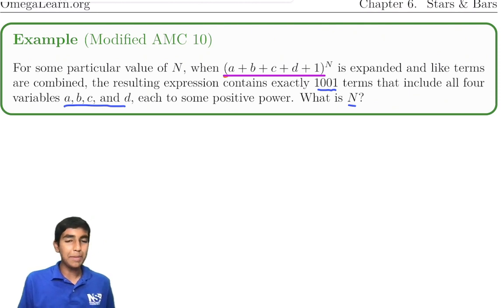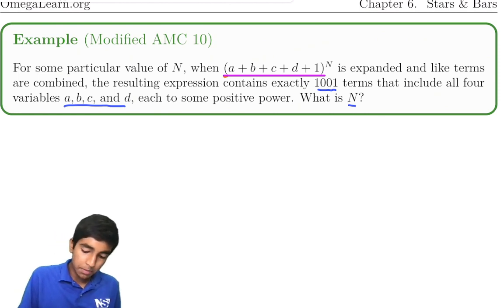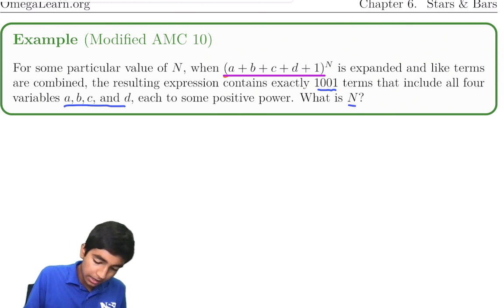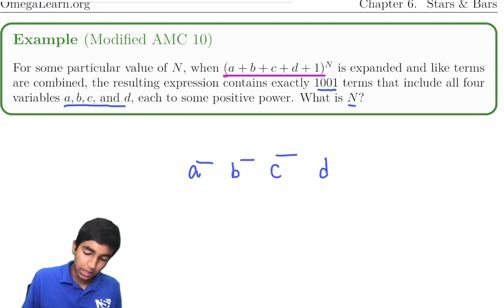Now, you might be wondering, how is this stars and bars? Well, notice that when we're taking this to the power of n, each term will have a to the something, b to the something, c to the something, d to the something, and 1 to the something.